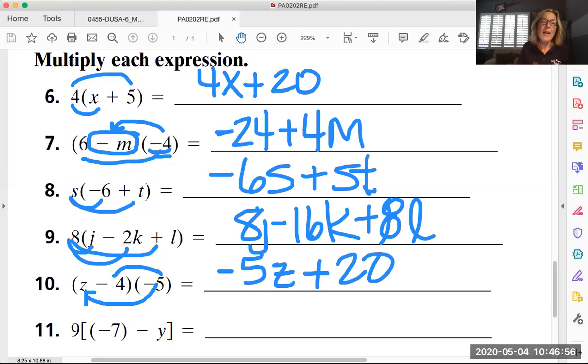And then on number 11 you'll see that the group is put together with brackets as opposed to parentheses. It doesn't matter. It's still a group. So nine times negative seven and nine times negative y.